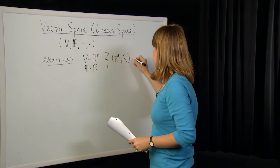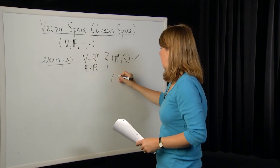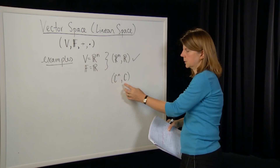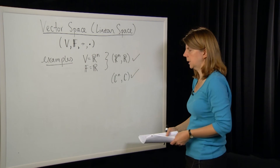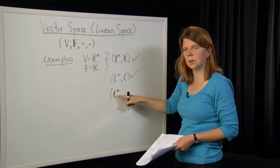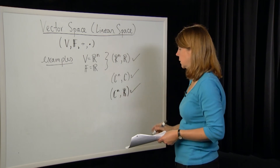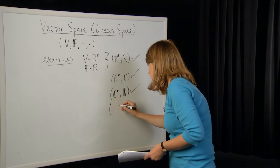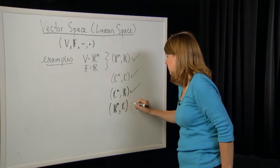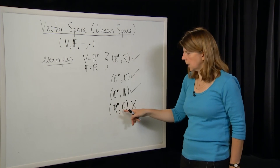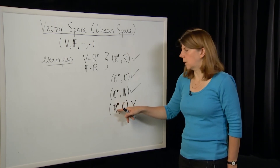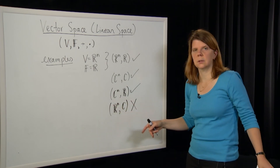We can replace ℝ with ℂ and look at ℂⁿ — vectors with complex entries over the field of complex numbers — and this is also a vector space. We can even have ℂⁿ over the field of reals and still get a vector space. But if we look at ℝⁿ — vectors with real entries — over the field of complex numbers, this is not a vector space. As soon as we perform scalar multiplication by a complex number, we leave ℝⁿ and end up in ℂⁿ. So it's not closed under scalar multiplication.